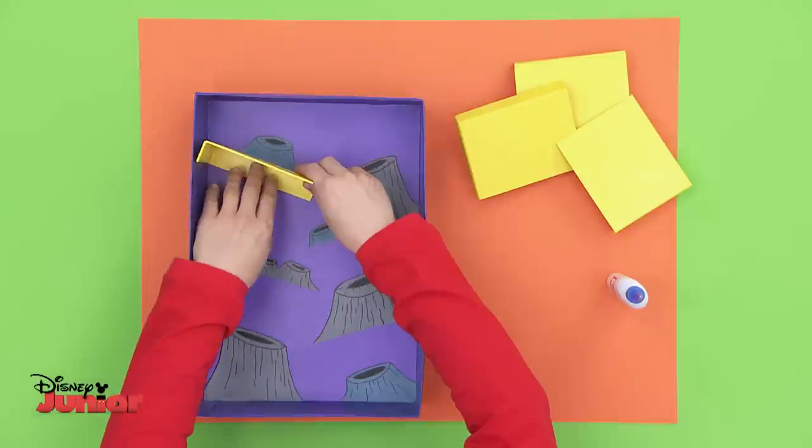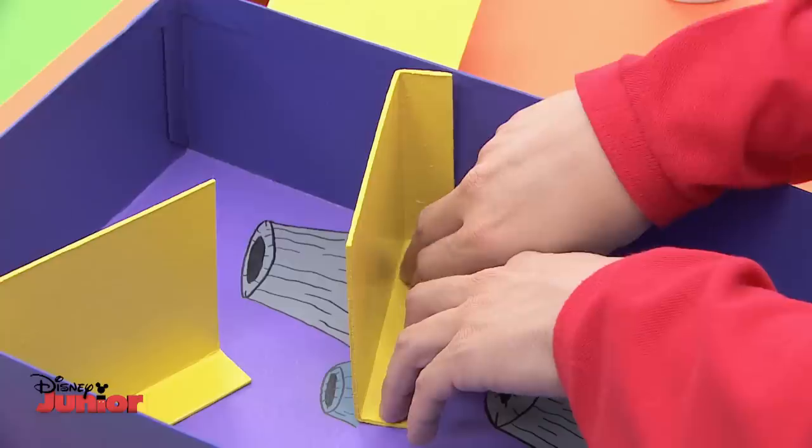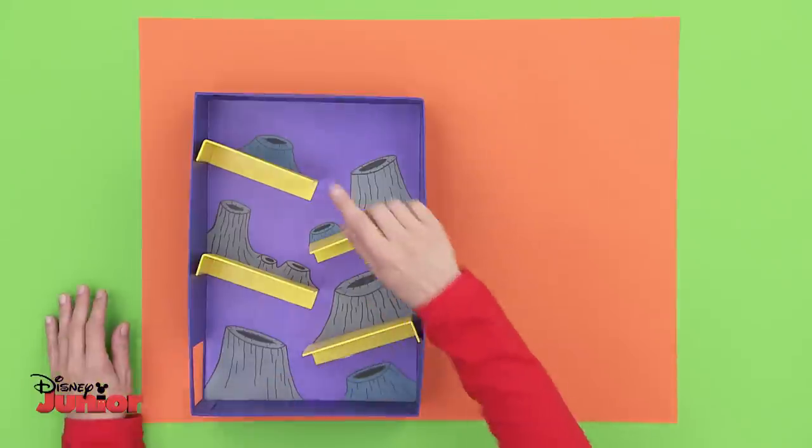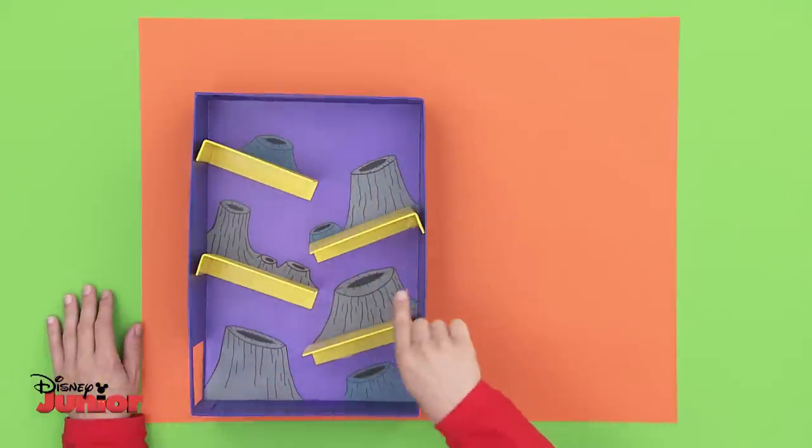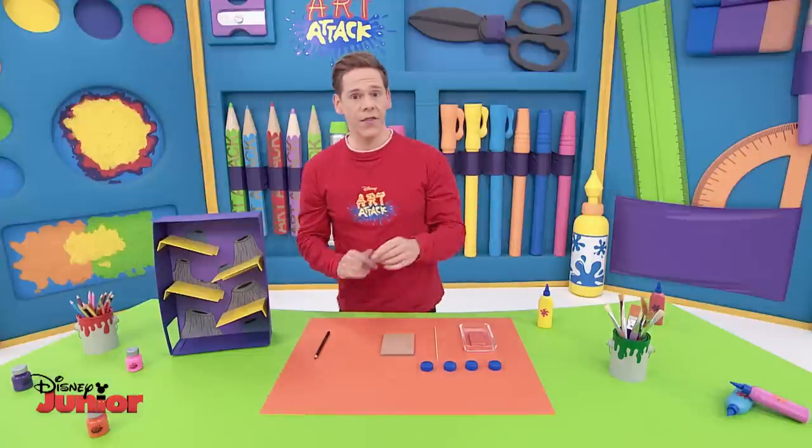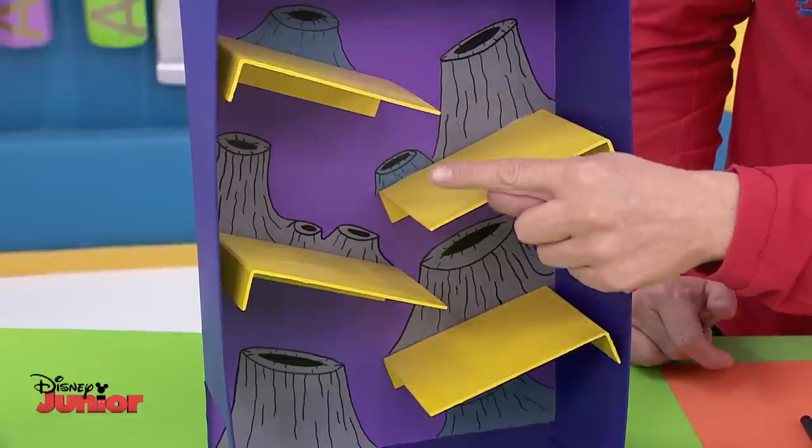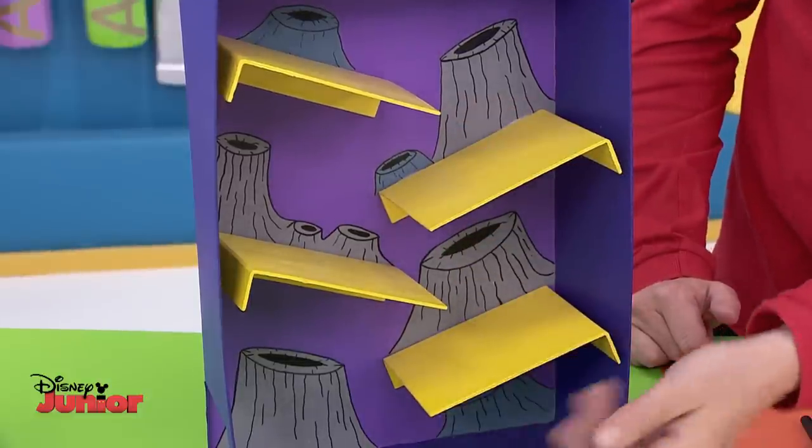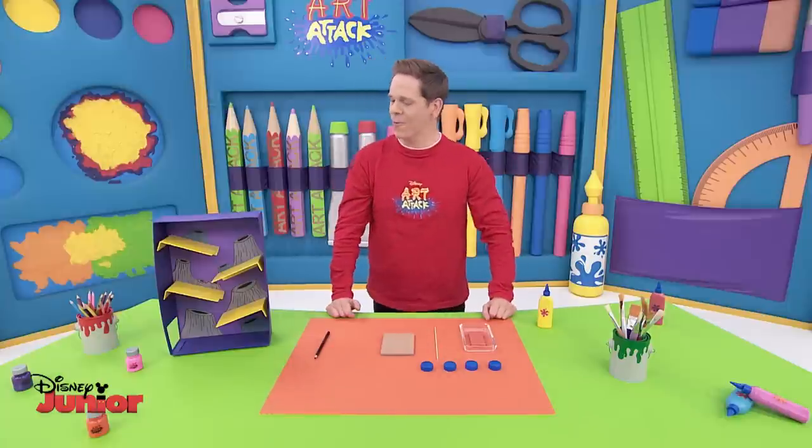Time now to glue the roads in place. Remember, from your pencil marks, they go below the volcanoes. Push down really firmly to make sure they stick. Very impressive. How great does this look? It's important that the road starts where the last one ends, so our intergalactic transporter won't fall off the road as it explores our purple planet.